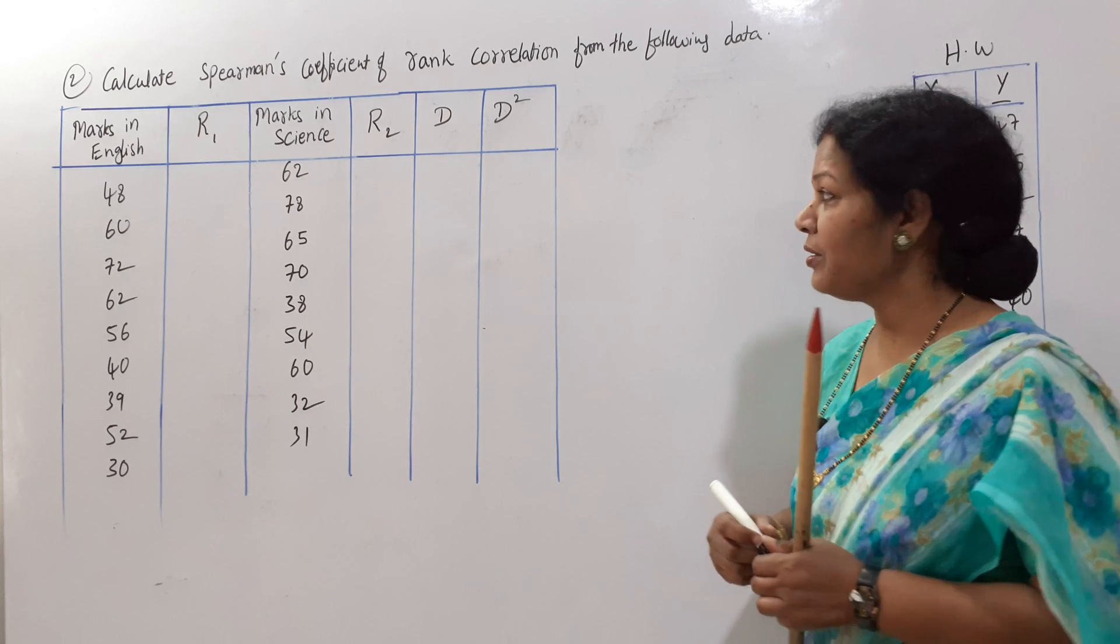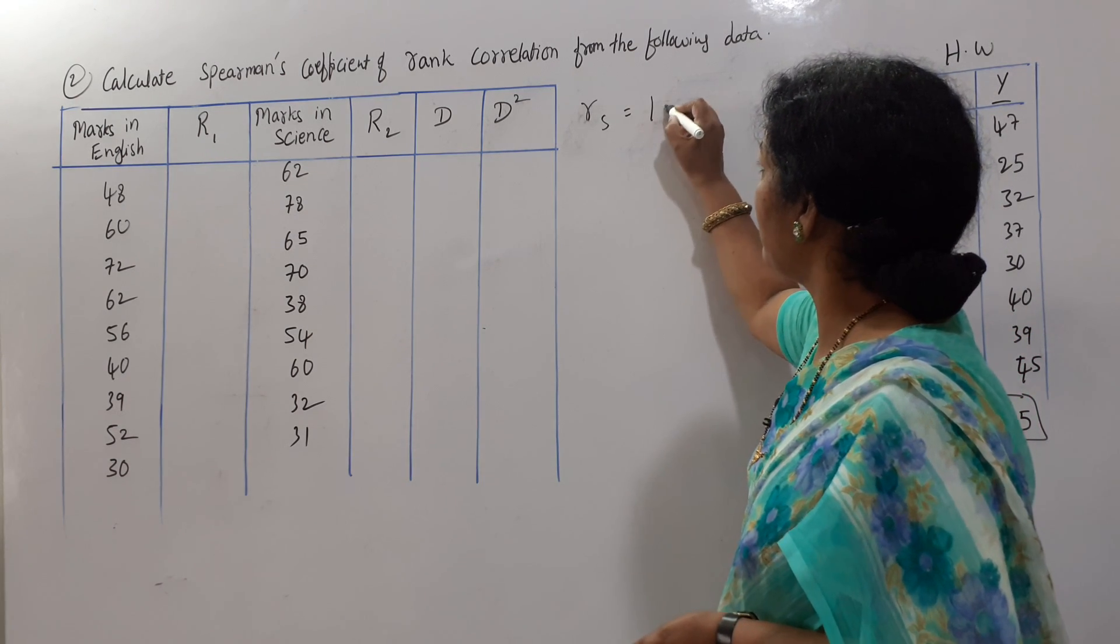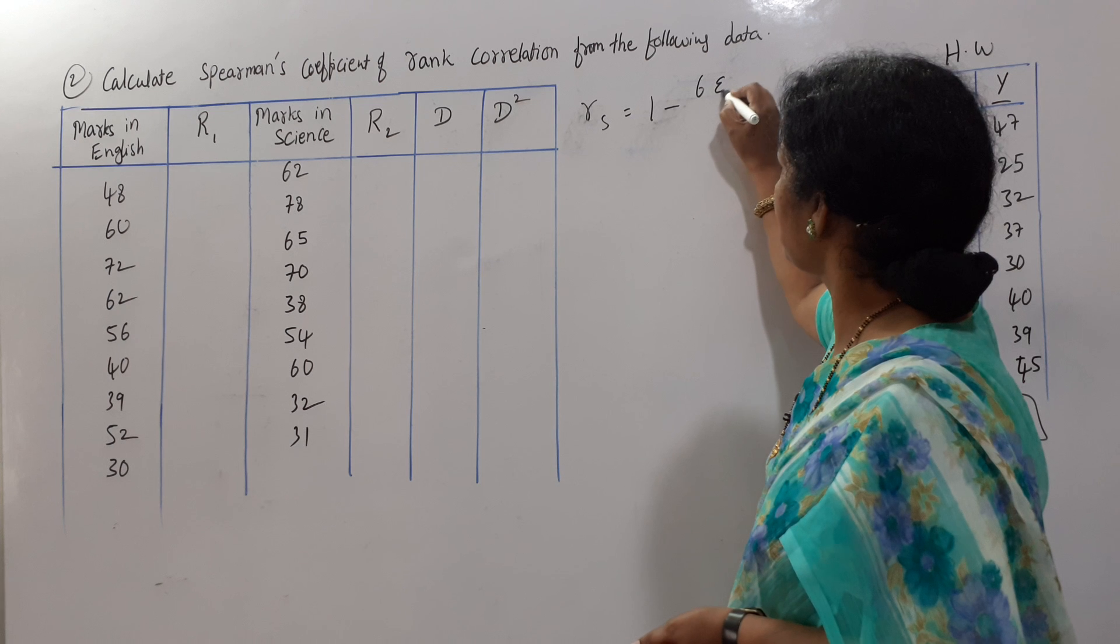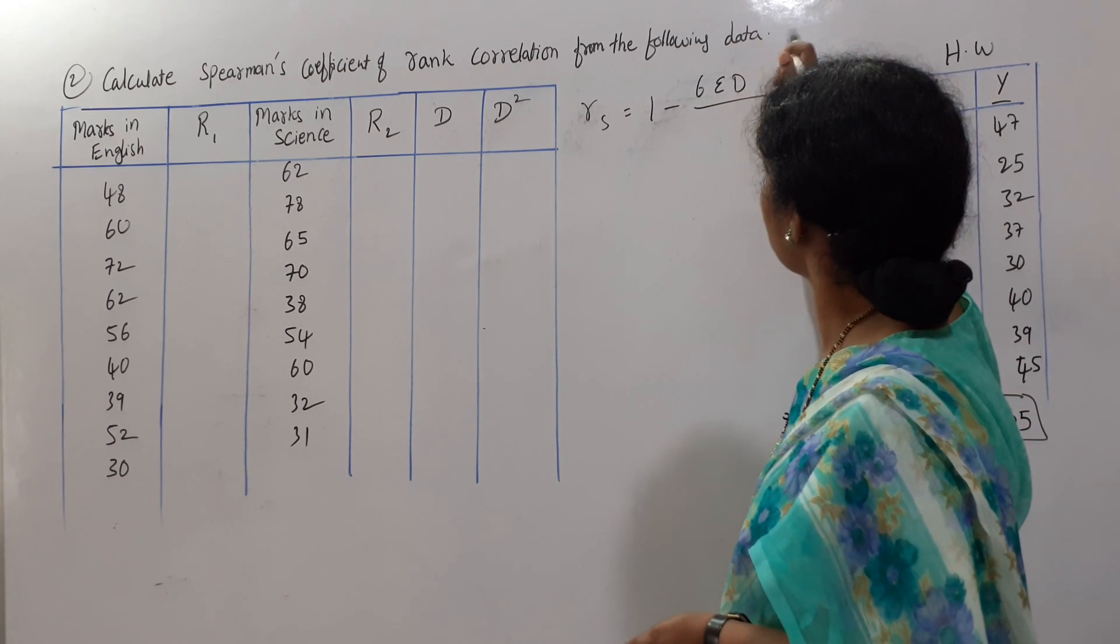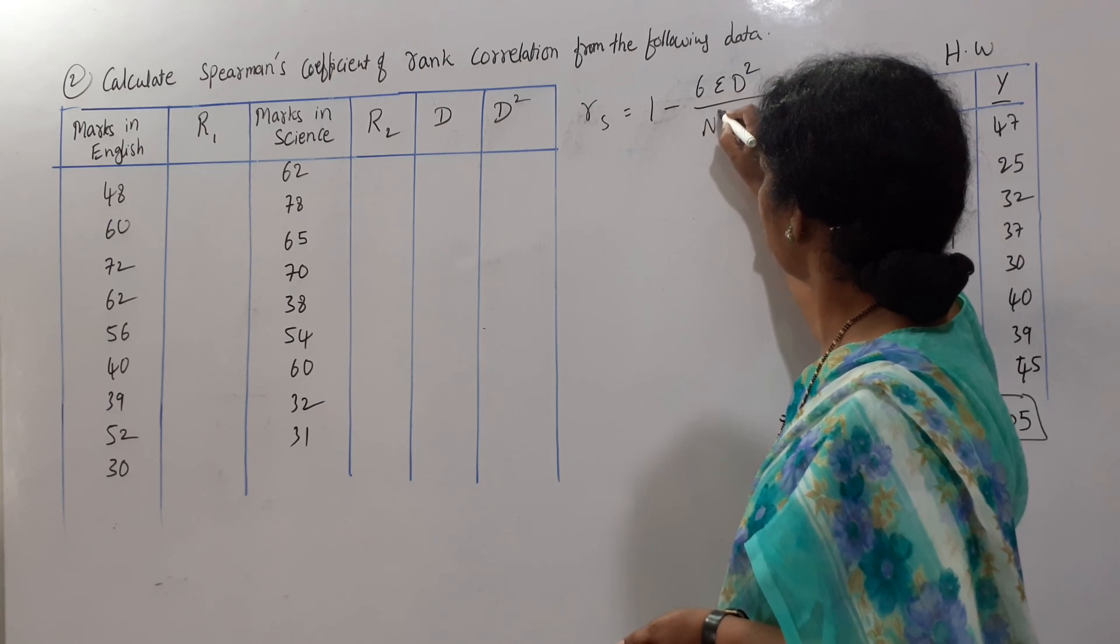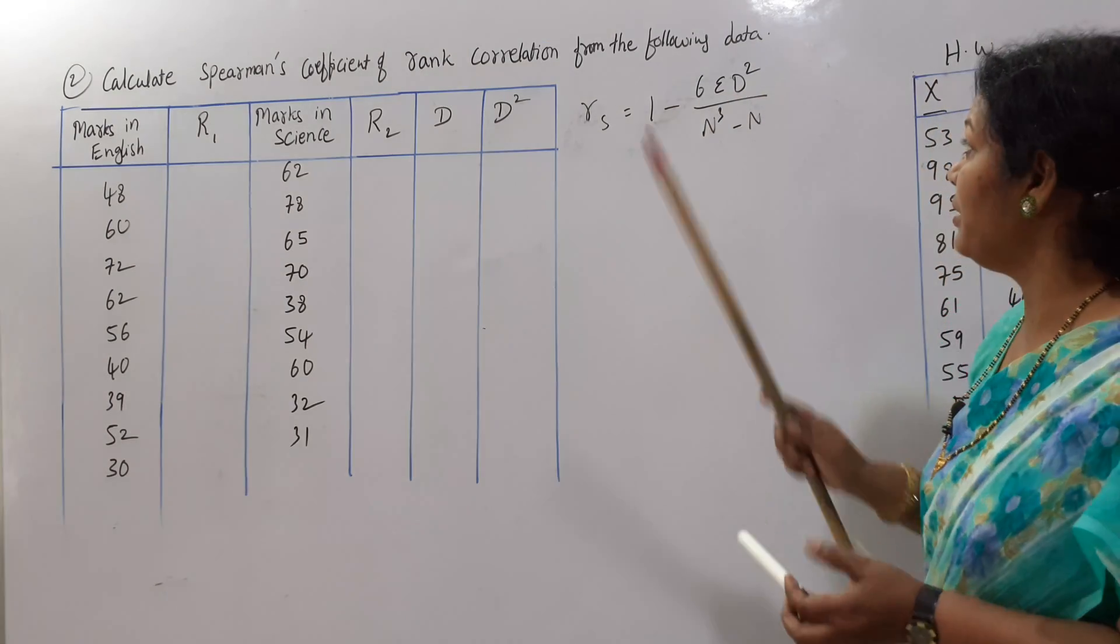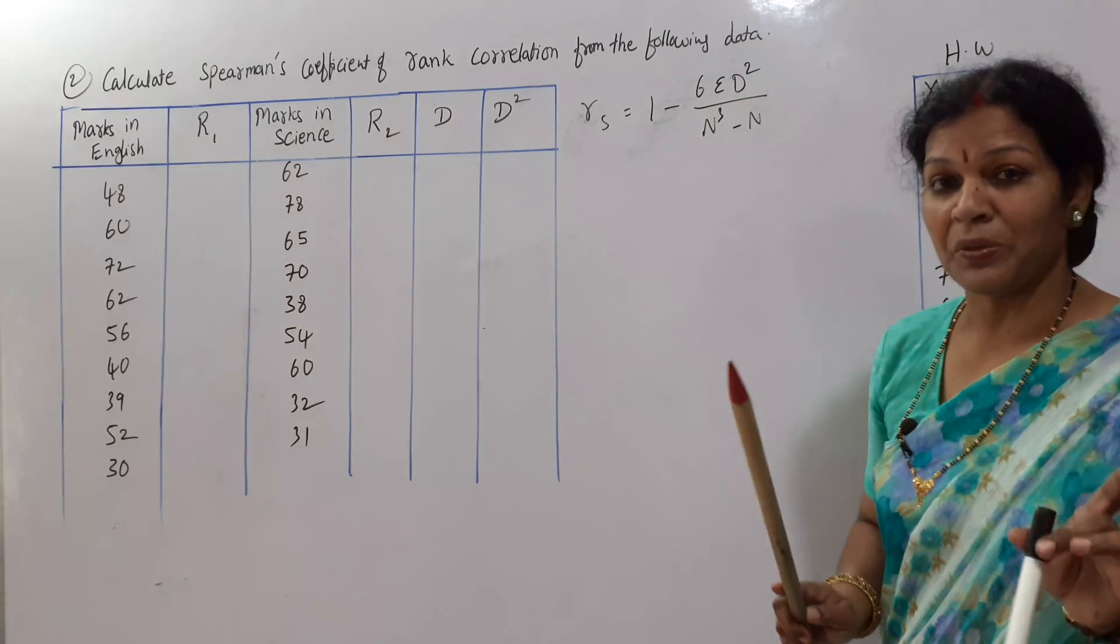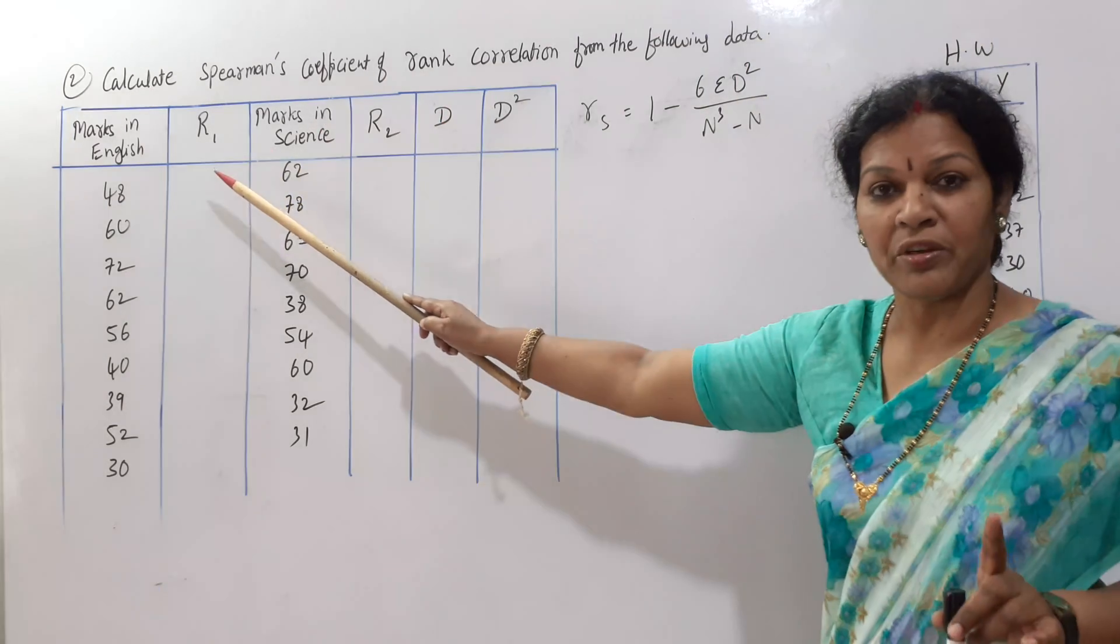Now we know the formula, what is the formula for rank correlation? Rs is equal to 1 minus 6 sigma D square, sorry, D square by N cube minus N. So this is the formula. As per the formula, what do we need? D square. D square means first we need to know D, then D square. So these are the columns I have already provided.